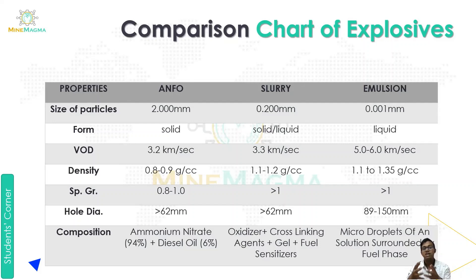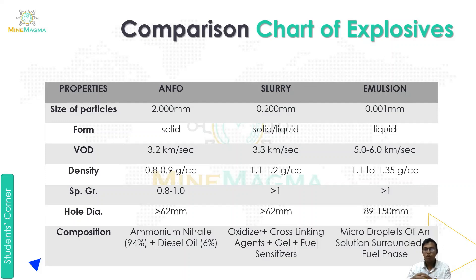In the comparison chart, the particle size for ANFO is 2.000 mm, for slurry it is 0.200 mm, and for emulsion it is as small as 0.001 mm. In terms of physical form: ANFO is in solid form, slurry is in solid and liquid form, and emulsion is in liquid form.